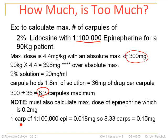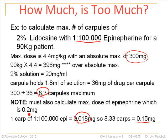One carpule of 1 to 100,000 epinephrine equals 0.018 mg. So in our 8.3 carpules, the amount of epinephrine comes out to 0.15 mg. That's still under the allowable maximum of 0.2 mg, so we can still use 8.3 carpules.